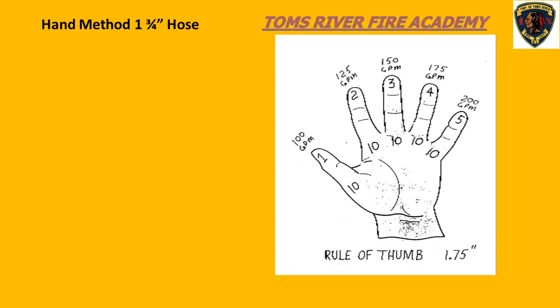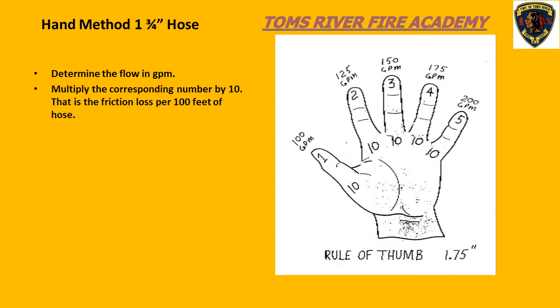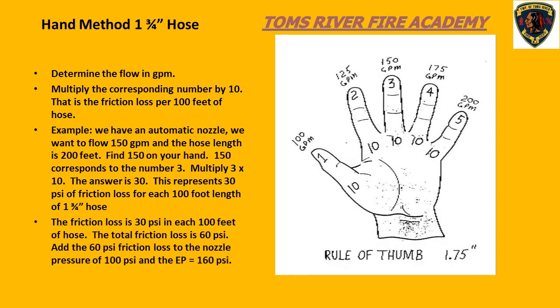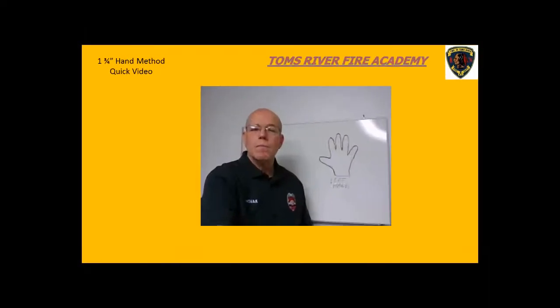Here is the hand method rule of thumb that we can use to determine friction loss. The first thing we always need to know is the required flow in gallons per minute. Each finger has a designated flow in GPM, and each flow also has a designated number. To find the friction loss, just select the flow, take the assigned number, and multiply it by 10. That will give you the friction loss for each 100-foot section of hose. The next slide has a short video to walk you through the hand method for inch and three-quarter hose.